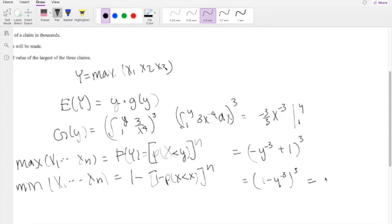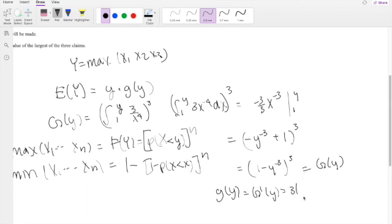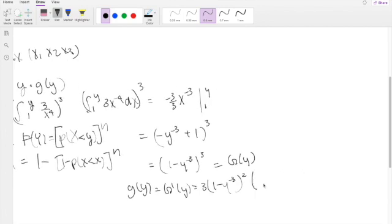But then this is equal to the G of y, right? And we're looking for the little g of y, which is just the derivative of G of y. So taking that derivative, you get 3(1 - y^(-3))^2, times the chain rule on the inside, so it becomes 3y^(-4).